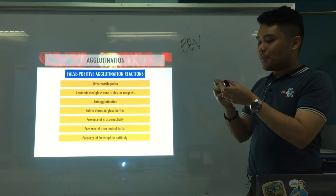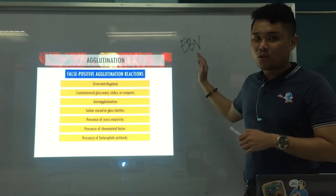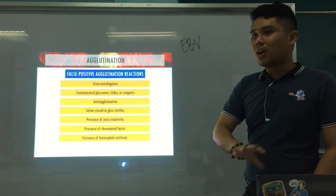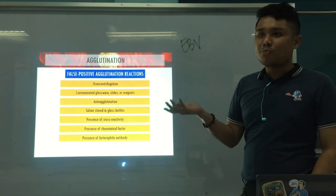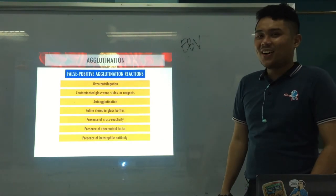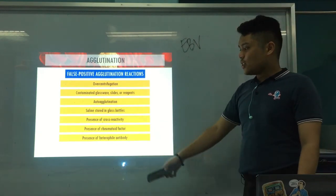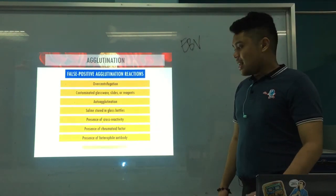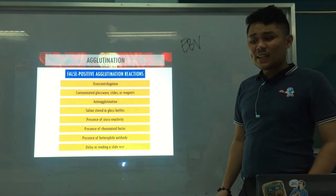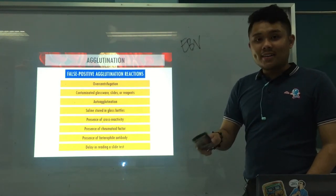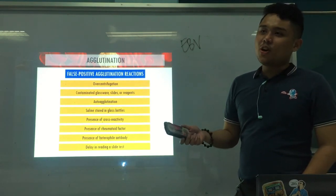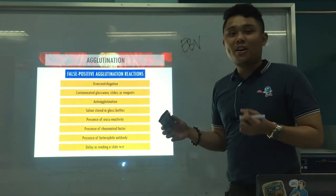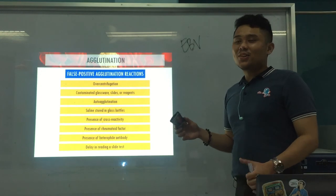You'll encounter heterophile antibodies more when we discuss EBV — Epstein-Barr virus serology. The main point is that heterophile antibodies can react with antigens of different species — bovine, sheep, guinea pig — not just human antigens. Because they react with so many antigens, they can cause false positive reactions. Delay in reading a slide test: if reading is delayed, the blood on the slide can dry and appear as if agglutination occurred, leading to a false positive.